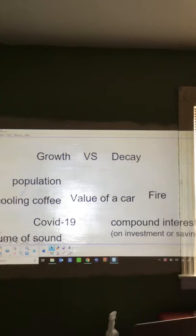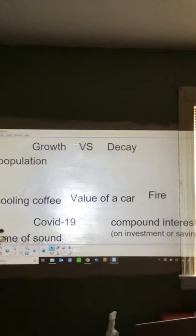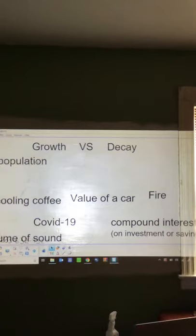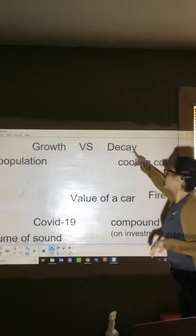Here are some examples of different types of growth and decay. Population growth is continuous growth at a rapid rate because most people don't just have one child. The average couple in America right now has about three kids — it used to be 2.5, but you can't have half a kid. So our population is exponential because it's not like one person is having one child.